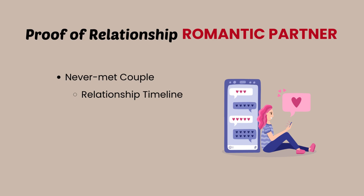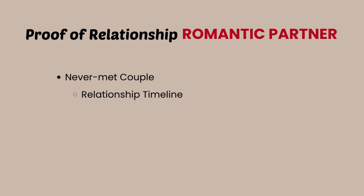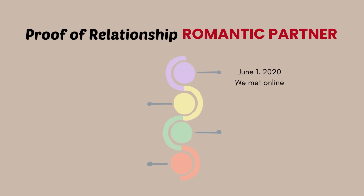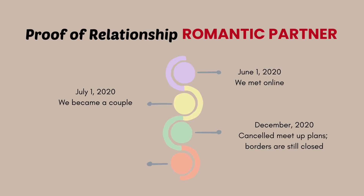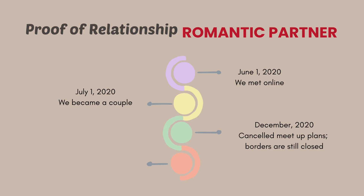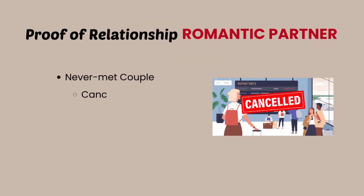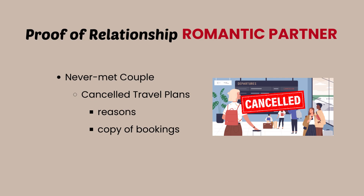Create a table and include the date and the event. For example, June 1, 2020: you met each other on a dating app. July 1, 2020: you became a couple. December 2020: you started making plans, but the country wasn't open yet because of the pandemic — those are parts of the relationship timeline you can include. If you had several travel plans together that were canceled for different reasons, include a copy of the bookings — the flight itinerary, the accommodations — and enclose a copy of the reason in your cover letter.